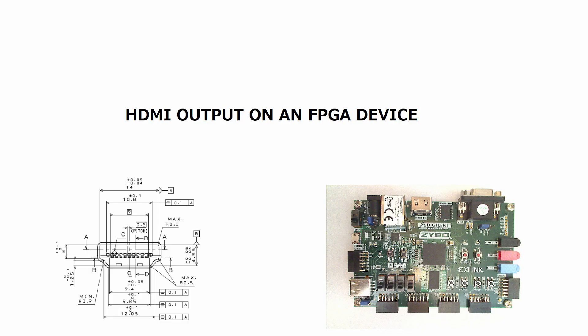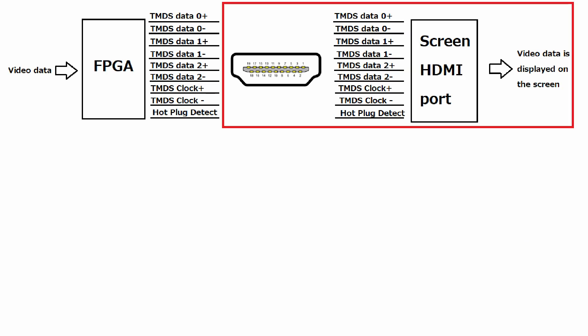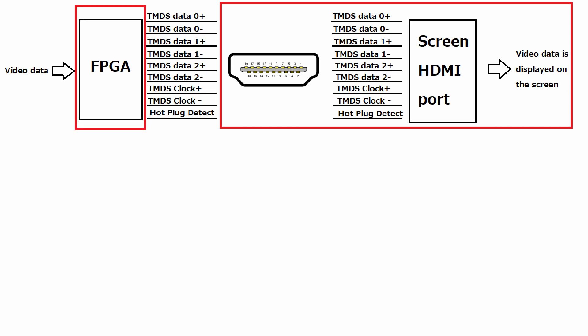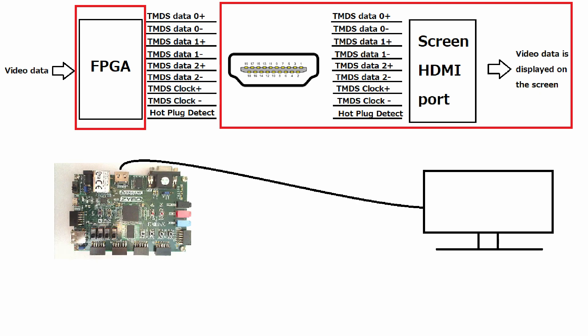From the previous part, we have already understood about the method of outputting VGA video signals. In this part, we will try to implement output of HDMI signals by FPGA. The task is to connect the HDMI output of FPGA to the screen, then manipulate the FPGA to give output to the screen. For simplifying the task, the output is first a white frame on the screen, then the code will be modified to give out different signals on the display.